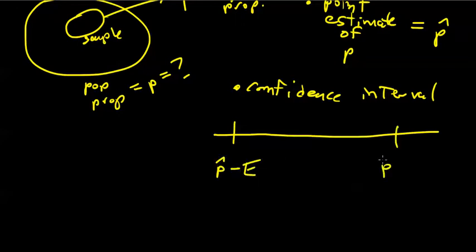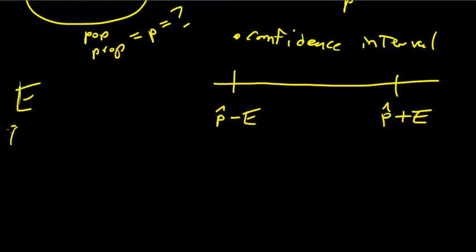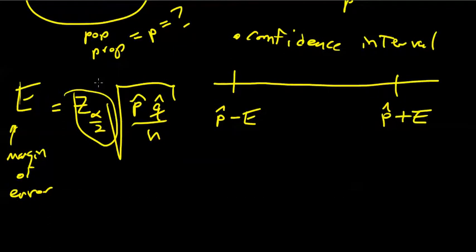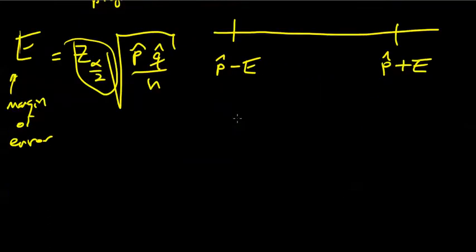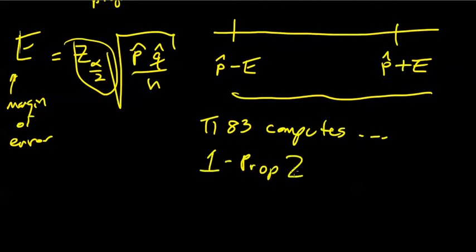We introduced this mysterious value E, which the calculator computes for us upstream. E is our margin of error, referred to throughout this chapter. The actual value of our margin of error depends on a z-value and properties of the z-score. The TI-83 calculates upper and lower limits with this command — it's one-prop z-interval. This z indicates the z-value being used upstream to compute our margin of error.